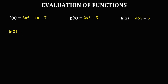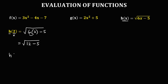For h of 2: from h of x, x is equal to 2, so we have the square root of 6 times 2 minus 5. Then 6 times 2 is 12, minus 5 gives 7. Therefore, h of 2 is equal to the square root of 7.